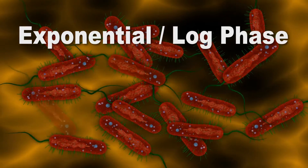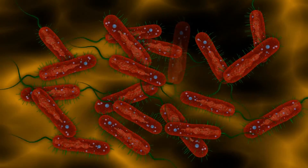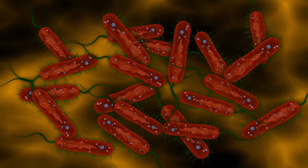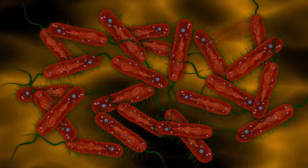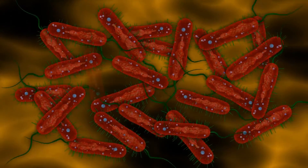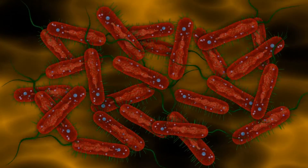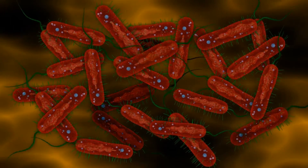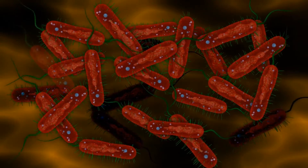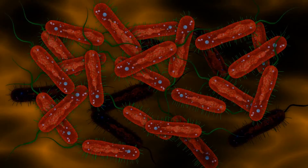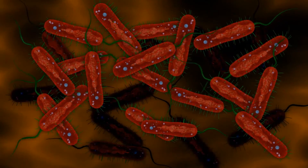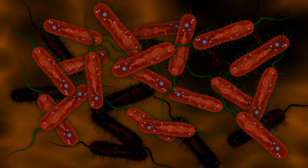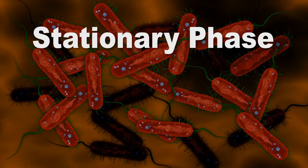But eventually, the nutrients in the media are consumed. Toxic, metabolic waste products build up, cells begin to die, and growth slows. When just as many cells are dying as are dividing, the batch enters the stationary phase.